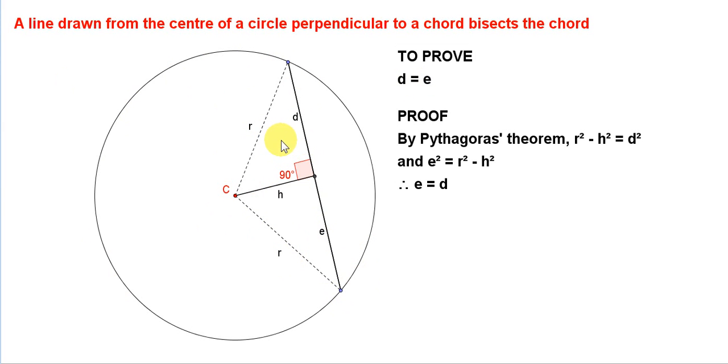By construction, we have two right-angled triangles formed, because this line was drawn perpendicular to the chord. Let's look at this right-angled triangle here.